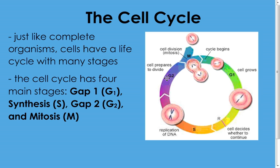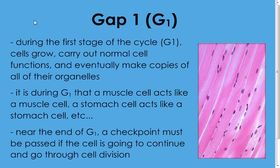Just like any cycle, it starts at one point and ends at another, then starts the process all over again. The first stage is Gap 1. This is where the cell goes through its initial growth — remember it started off very small. This is also where cells carry out their normal functions: a muscle cell creates movement, a stomach cell makes acid, a skin cell makes pigments. Anything a cell normally does happens during G1. Near the end of G1 there is a checkpoint — the cell must pass certain criteria to continue on with cell division.